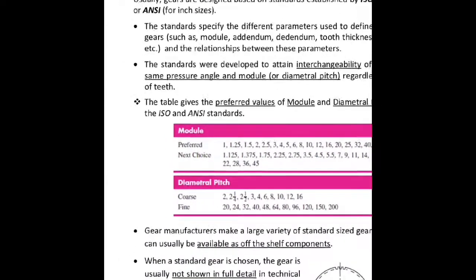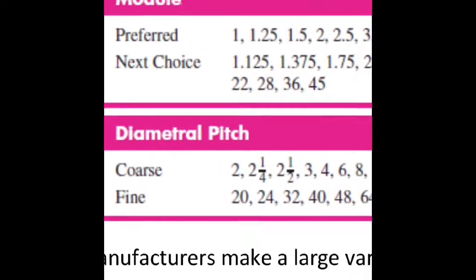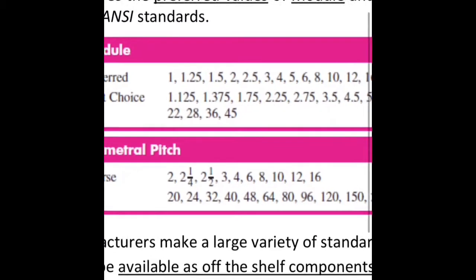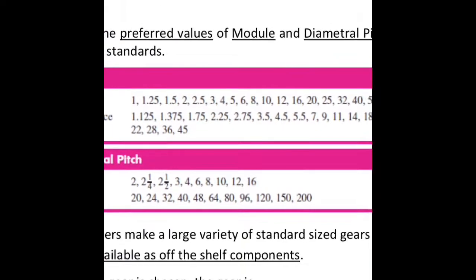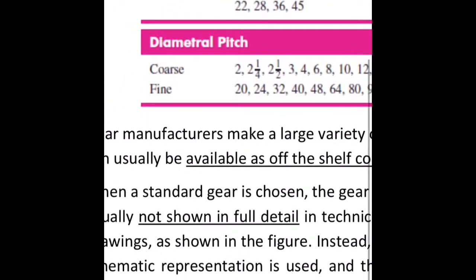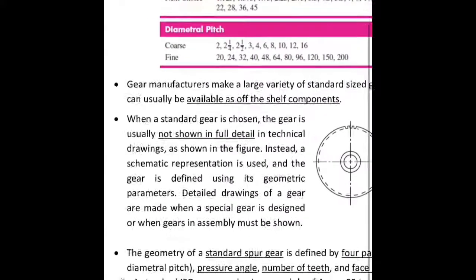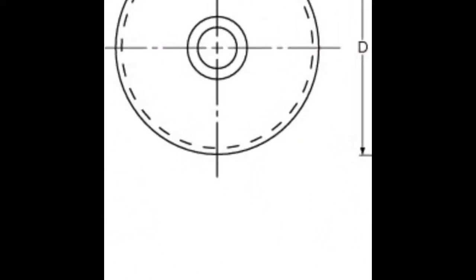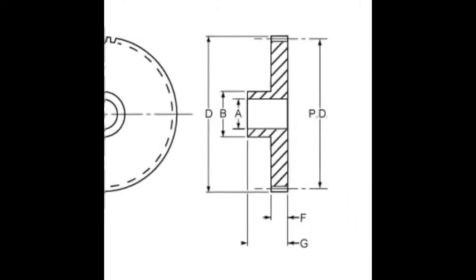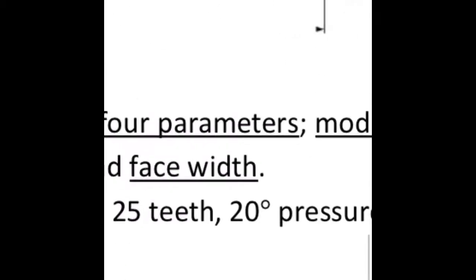When a standard gear is chosen, it is usually not shown in full detail in technical drawings. Instead, a schematic representation is used and the gear is defined using its geometric parameters. Detailed drawings of a gear are made only when a special gear is designed or when gears in an assembly must be shown. The geometry of a standard spur gear is defined by four parameters: module or diametral pitch, pressure angle, number of teeth, and face width. For example, a standard ISO spur gear with a module of 4 mm, 25 teeth, 20° pressure angle, and 30 mm face width is designated as: ISO Spur Gear 4M 25T 20PA 30F.